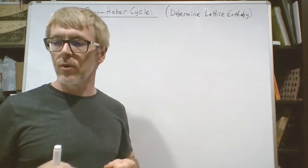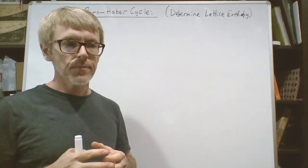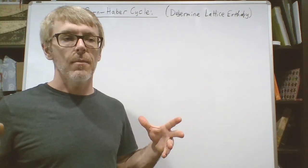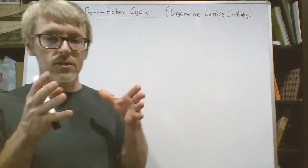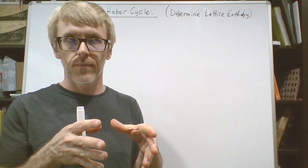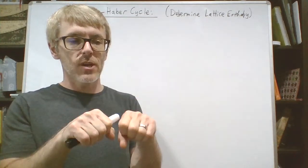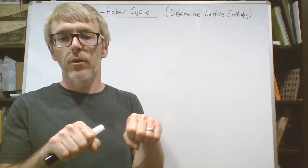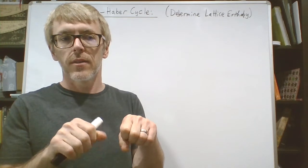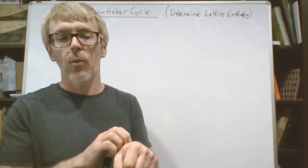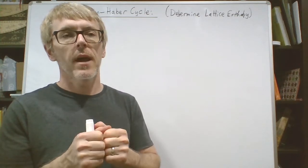To give you an analogy of what lattice enthalpy is, imagine you had a brick wall and you looked at two individual bricks. If you took two adjacent bricks and the mortar between those bricks, well the strength of that mortar would be the ionic bond strength. That would be ionic bond strength.